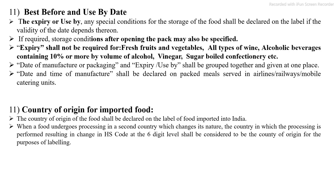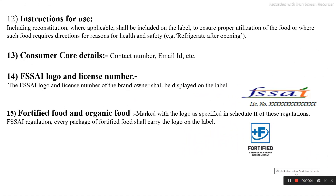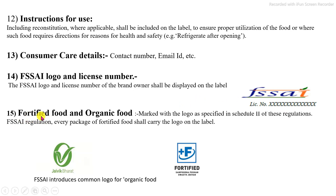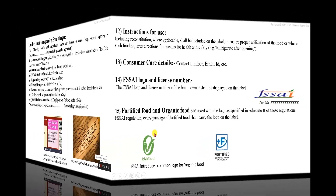For imported foods, the country of origin must be declared. Instructions for use, specific storage conditions, preparation process, and specific applications must be declared. Customer care details including contact number and email ID must also be included. The FSSAI logo and license number are compulsory. If the food is fortified, a specific fortification symbol is used. If the product is organic, the 'Jaivik Bharat' symbol must be declared on the product.